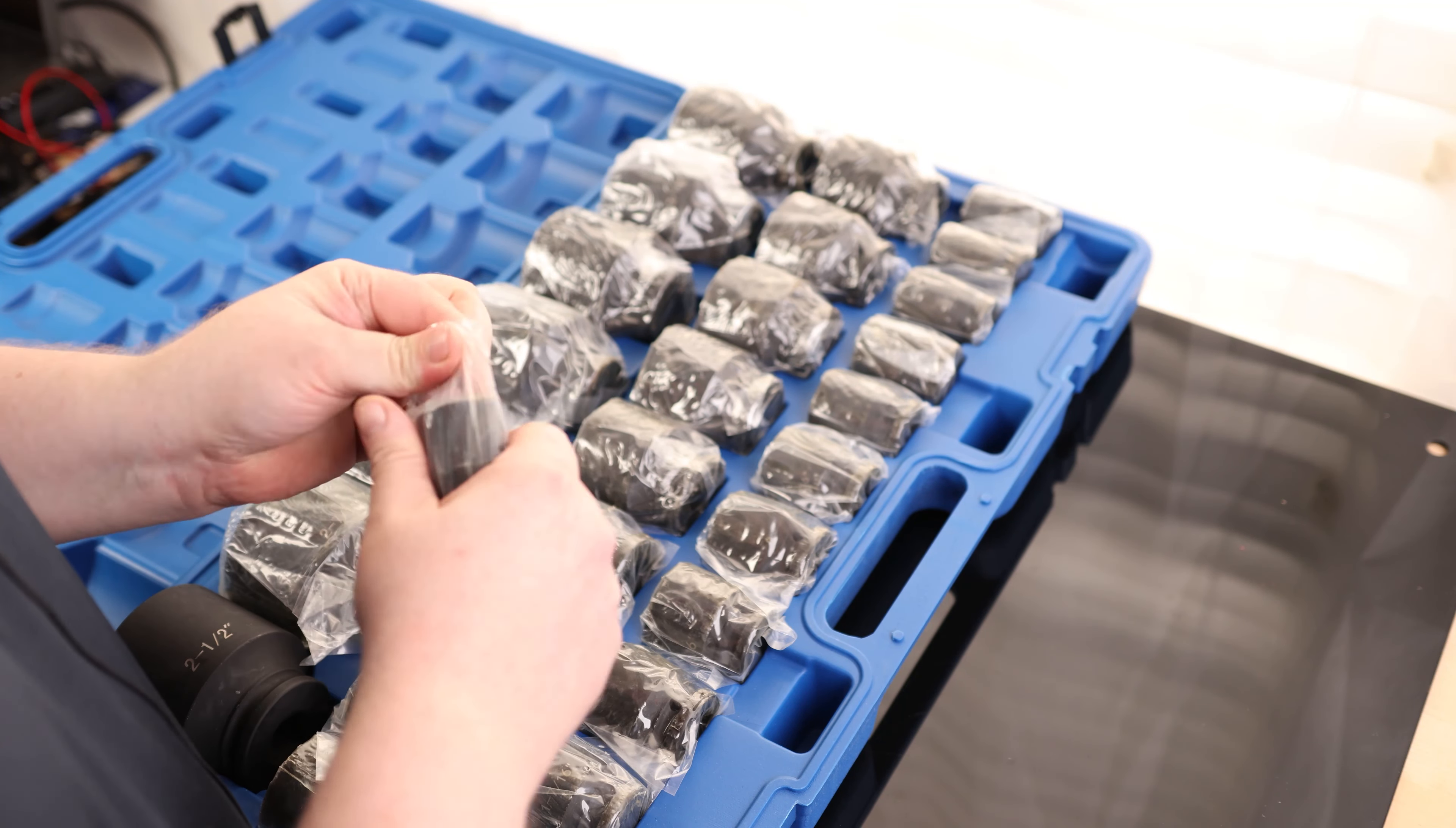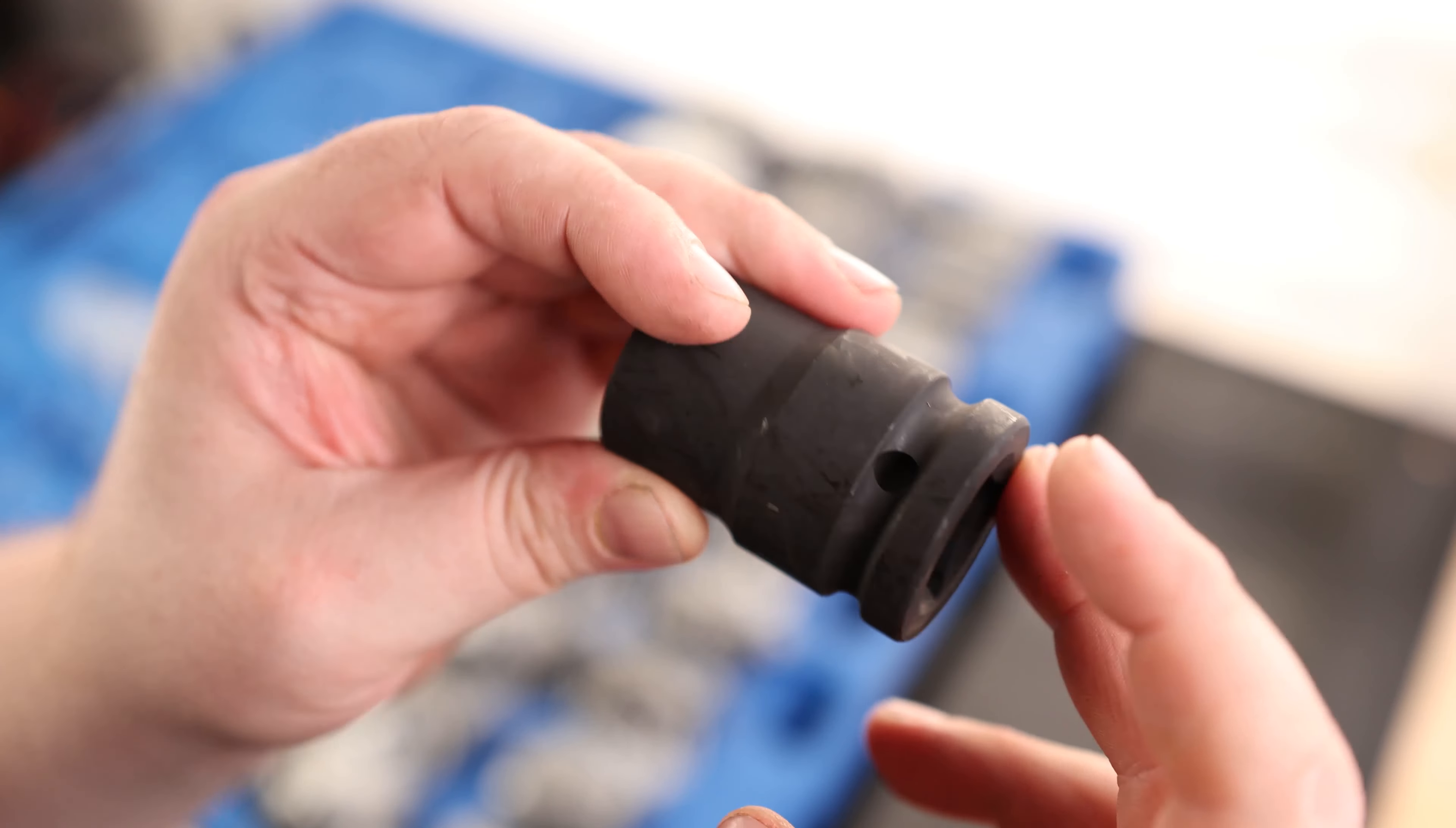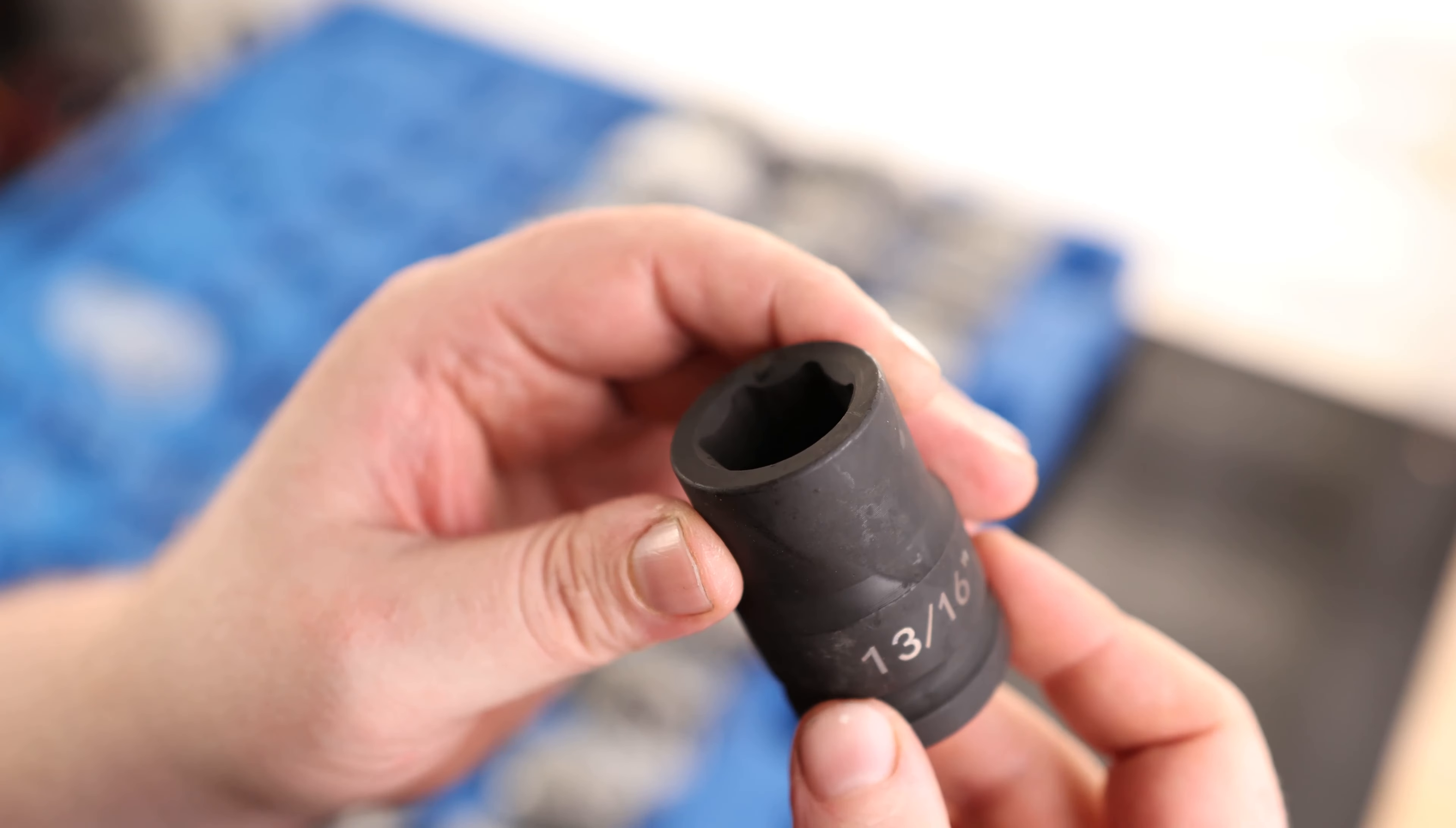So the bottom size that we got is a 13 sixteenths. So again, good looking socket. Got all the same features. It's still a six point off corner loading. We still got that three quarter inch drive on the back with the pin. And if you got a three quarter inch drive impact wrench with a detent, you can just drop that right on there and that'll work as well. Whatever you need. But I mean, 13 sixteenths as the smallest size is kind of insane.